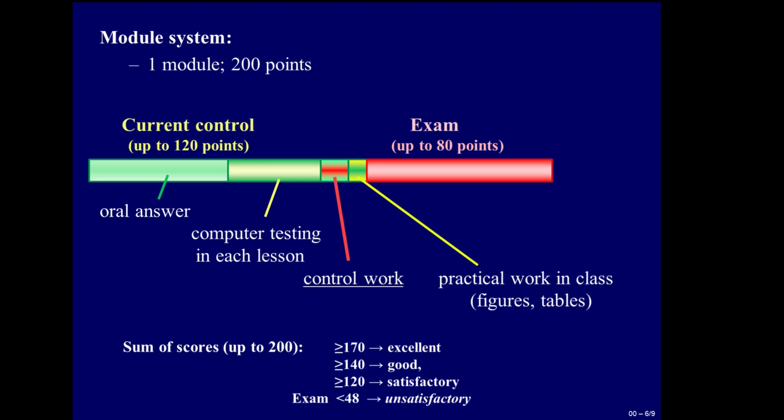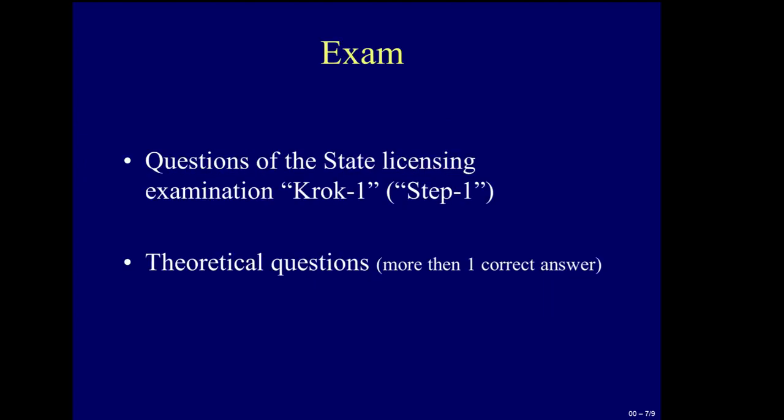And if a student will not pass an exam, receive less than 48 points, he or she receives unsatisfactory mark and must repeat examination. Exam includes questions of the state licensing examination CROC 1 or STEP 1 in English, CROC in Ukrainian. And theoretical questions that have more than one correct answer.